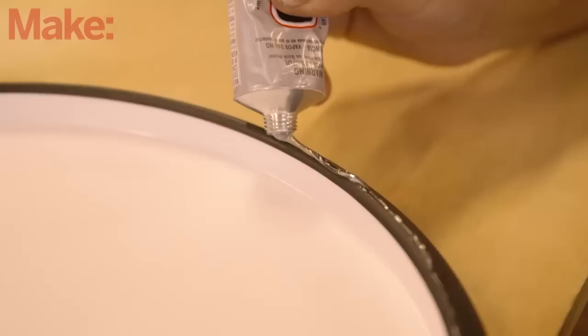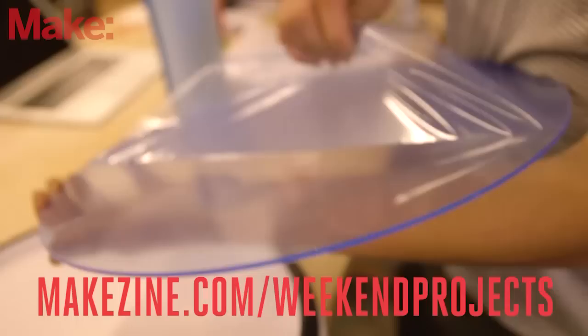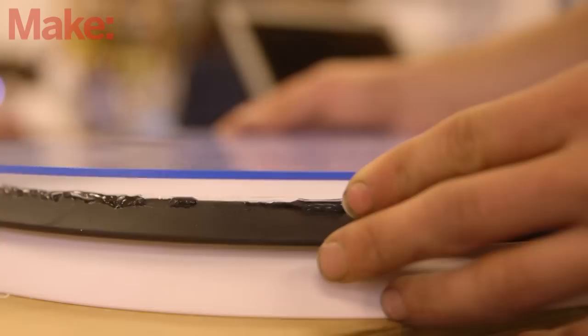Now we'll attach the top of the disc. Apply a continuous consistent bead of E6000 adhesive to the turntable's rubber edge. The glue should completely cover the highest point on the edge. Check out the project page for additional tips to help you along.